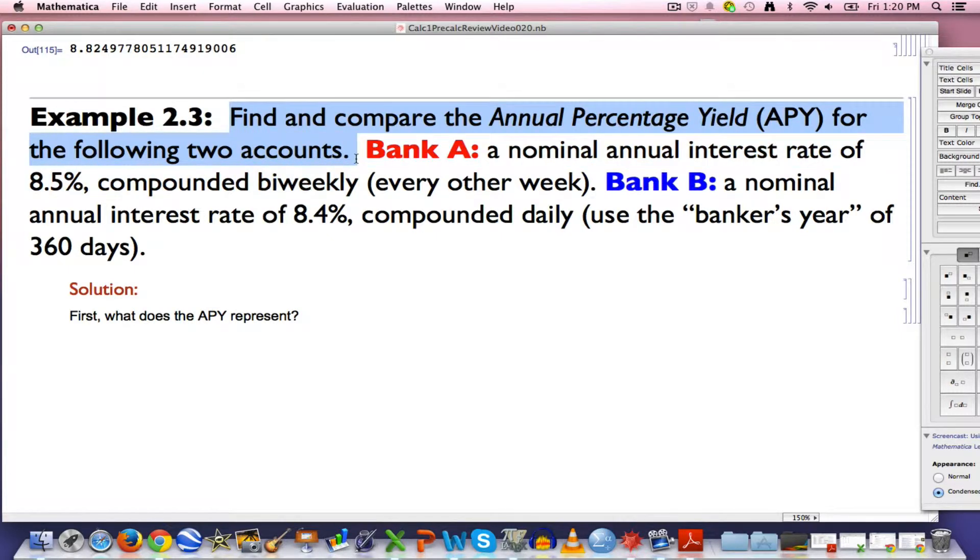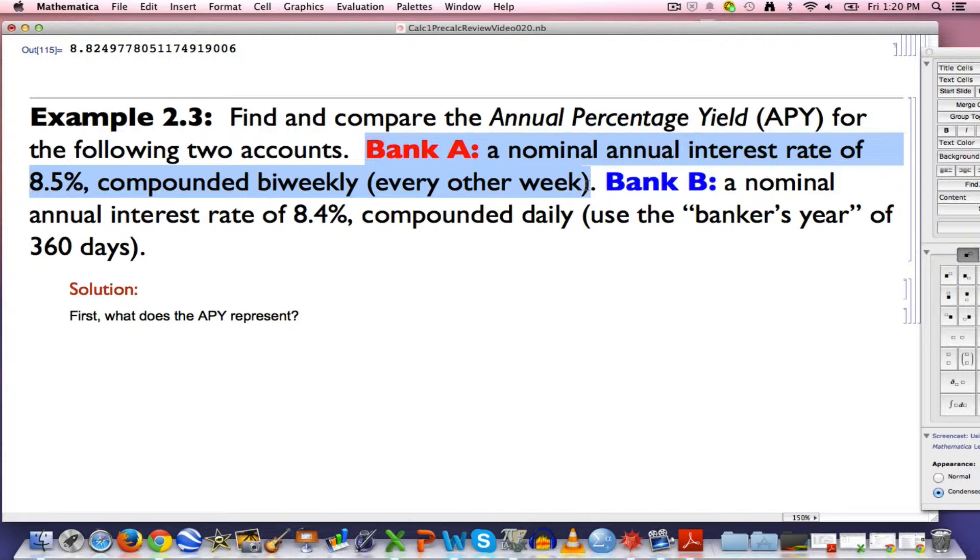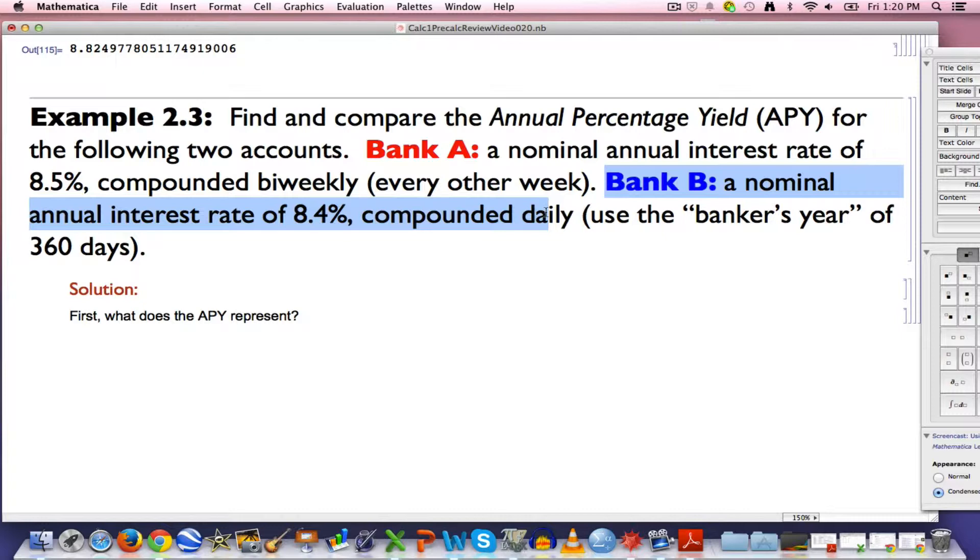Find and compare the annual percentage yields, APY, for the following two accounts. It's the APY that really should be the thing you compare when comparing two accounts. Whichever bank has the higher APY is the better bank for you. Bank A has a nominal annual interest rate of 8.5%, compounded bi-weekly. That's not twice a month, that's every other week, which means n is 26, not 24.